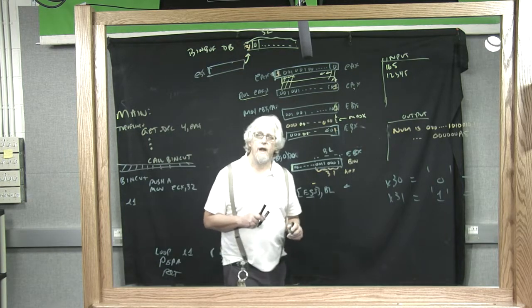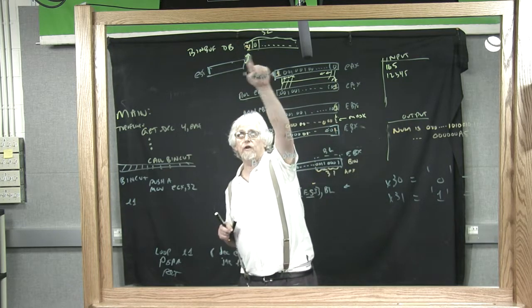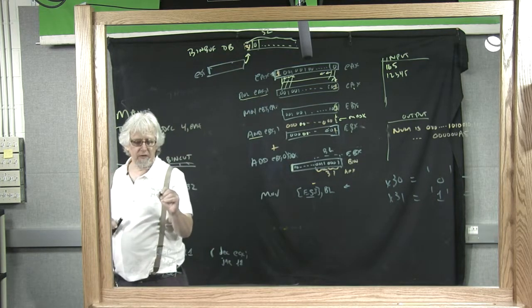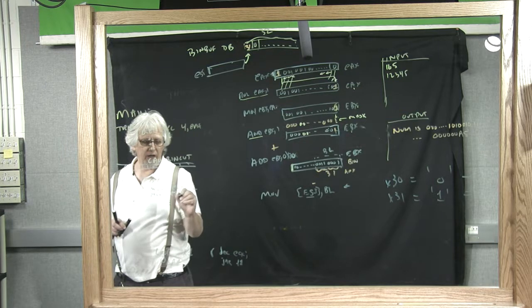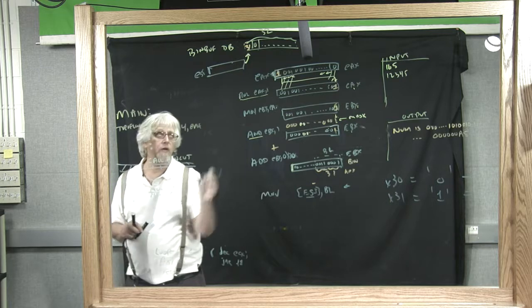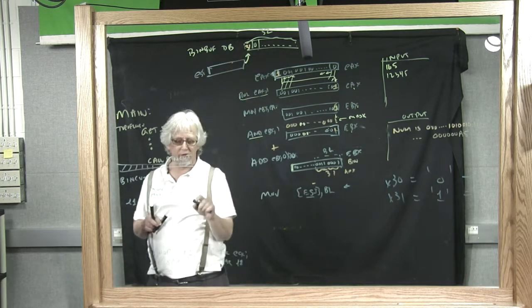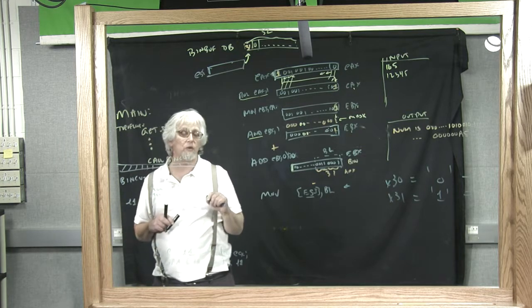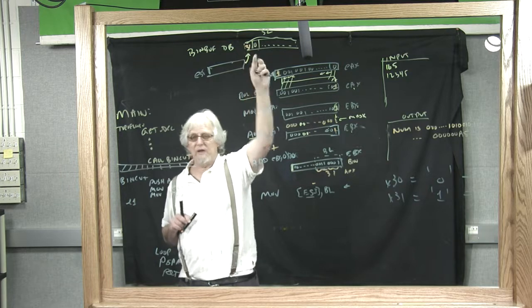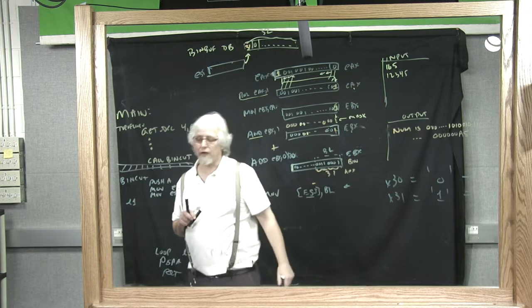The next thing we're going to notice is that ESI contains the address of bin_buff. We know how to do that: move ESI, bin_buff. Remember, bin_buff is a label for this spot in memory. When I say move bin_buff ESI, I'm taking this address, this label for this spot in memory, not the stuff in memory, and I'm putting it into register ESI. So yes, I can change that address.